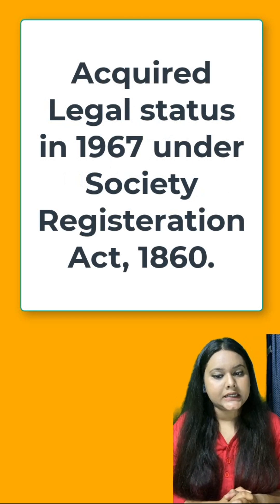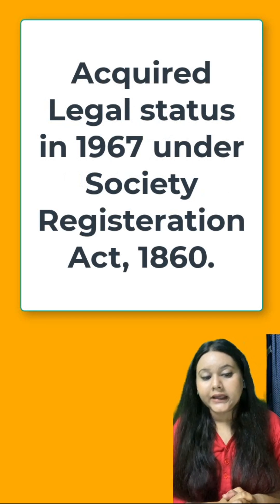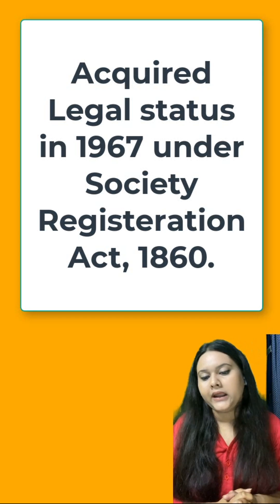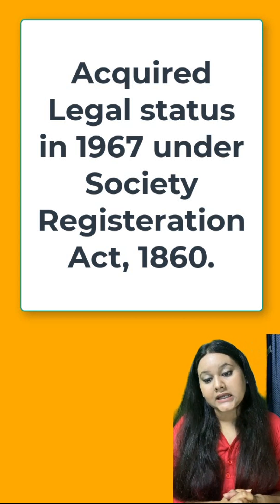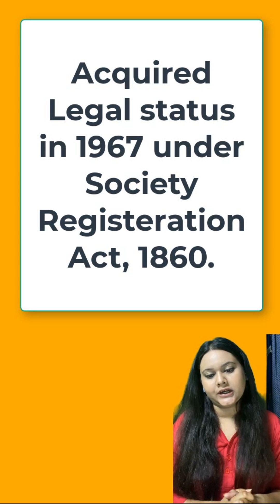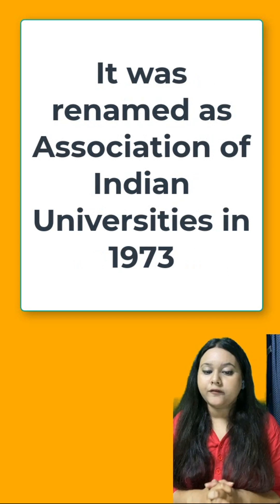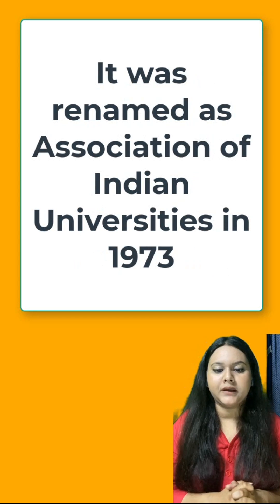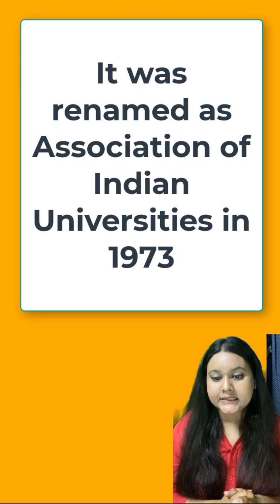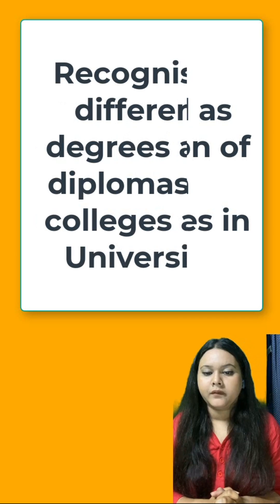This association was originally named the Inter-University Board, and this board was registered in the year 1967 as a society under the Society Registration Act of 1860. The Inter-University Board was then renamed the Association of Indian Universities in the year 1973.